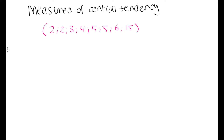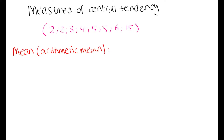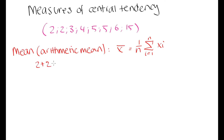The first way we can look at this is using the arithmetic mean. The mean is basically the average of the data set — we take each of these values, add them together, and divide by the number of values we have. So our mean, often denoted by X̄, is equal to the sum of our data set divided by the number of values. In this case, we take 2 + 2 + 3 + 4 + 5 + 5 + 6 + 15.